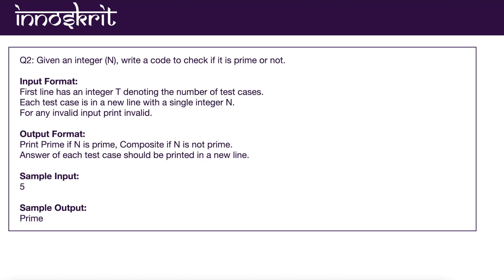This was question number two. You were given an integer n and you have to write code to check whether it is prime or not. It was so easy. The questions were very, very easy. The input format was like this: you have to take some integer t which is denoting the number of test cases. Then the next line of each test case is denoting the integer n. For that integer n, you just have to write a function whether it is prime or not. If it is prime, print prime. If it is composite, print composite.